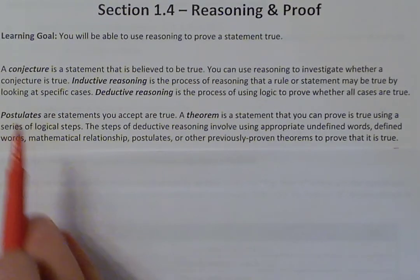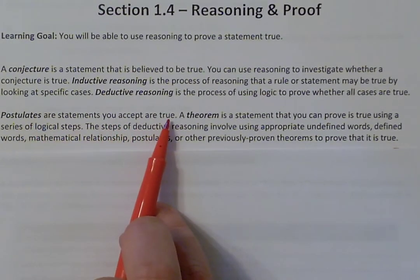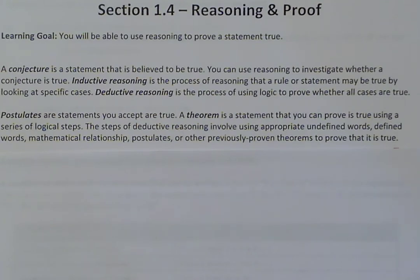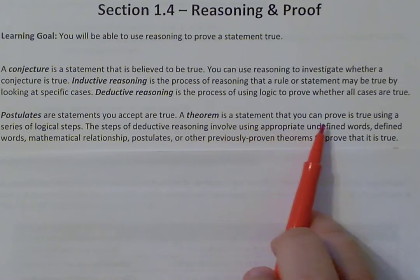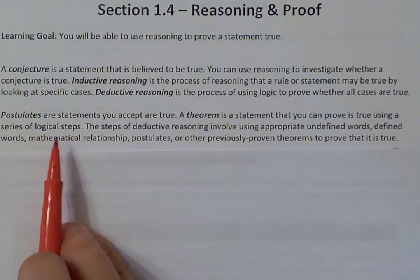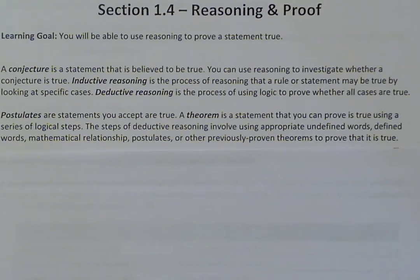Postulates are statements you accept are true. An example would be the segment addition postulate or angle addition postulate — things we accept as fact, recognized as the building blocks of geometry. A theorem is a statement you can prove is true using a series of logical steps. Those steps can use deductive reasoning, definitions, mathematical relationships, postulates, or other theorems.